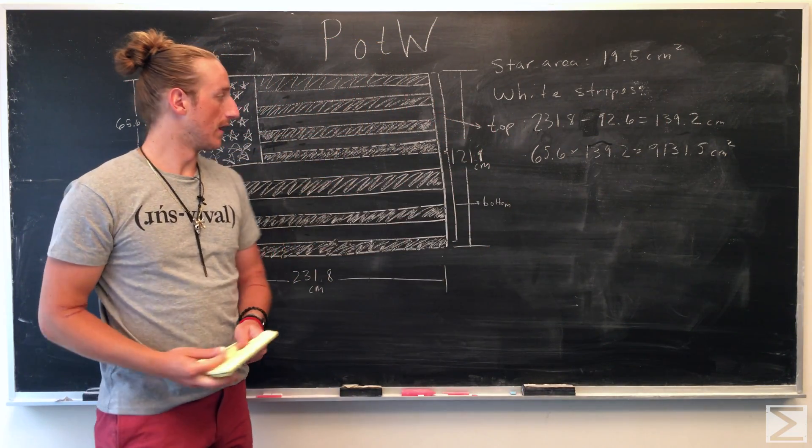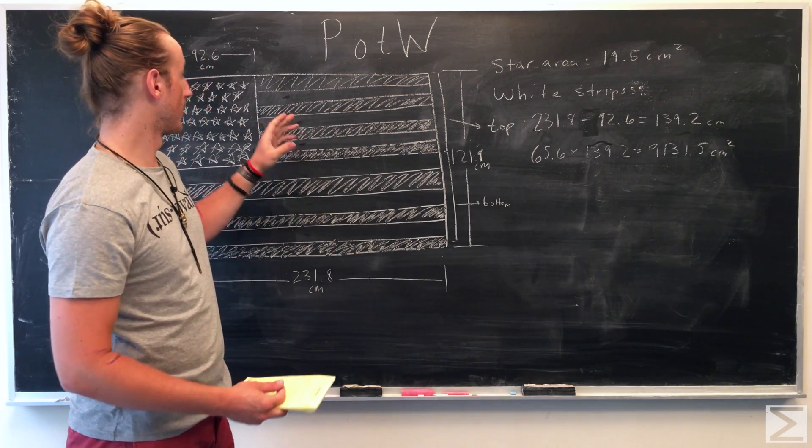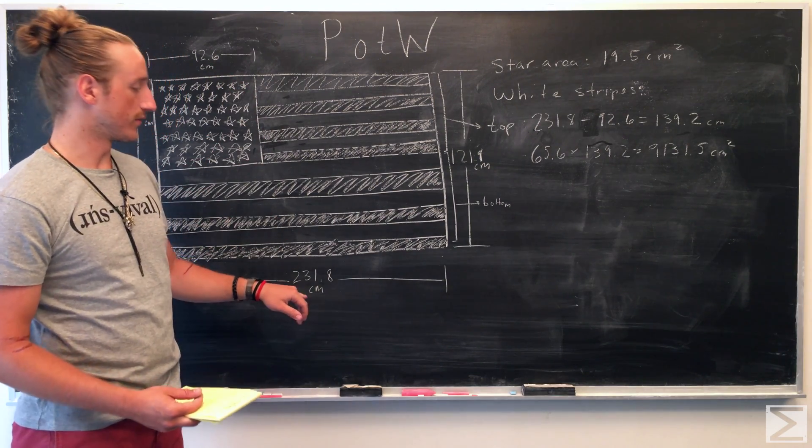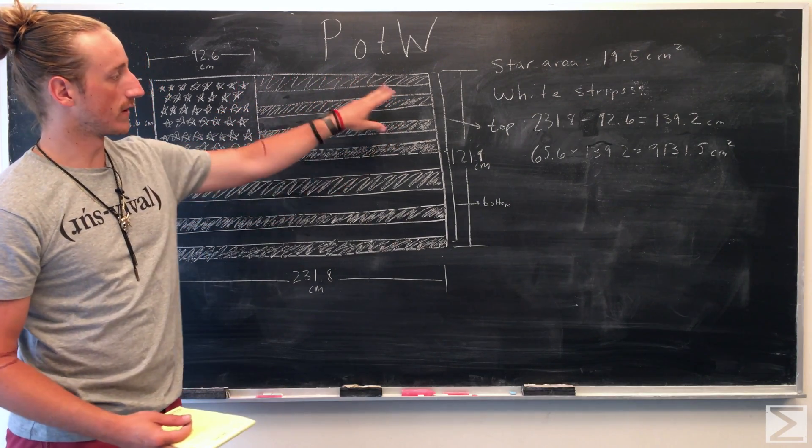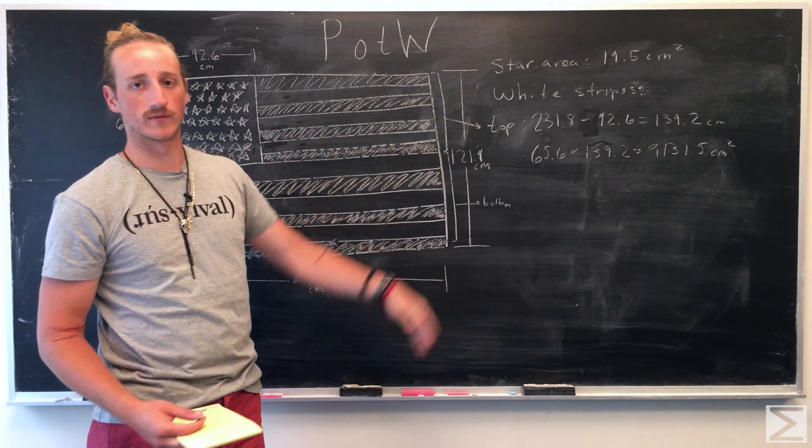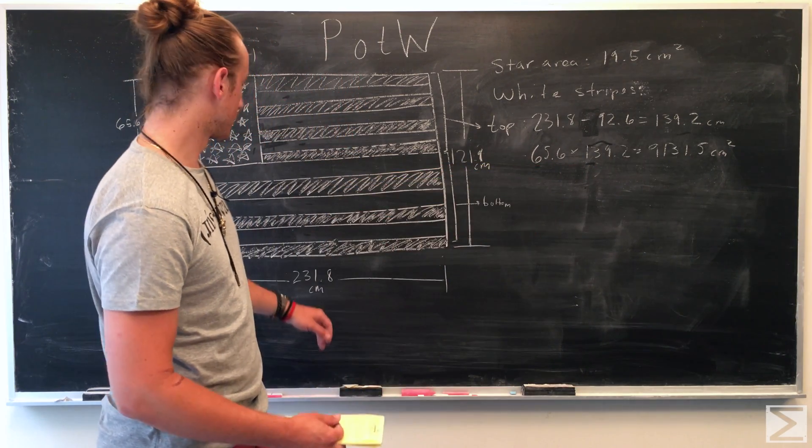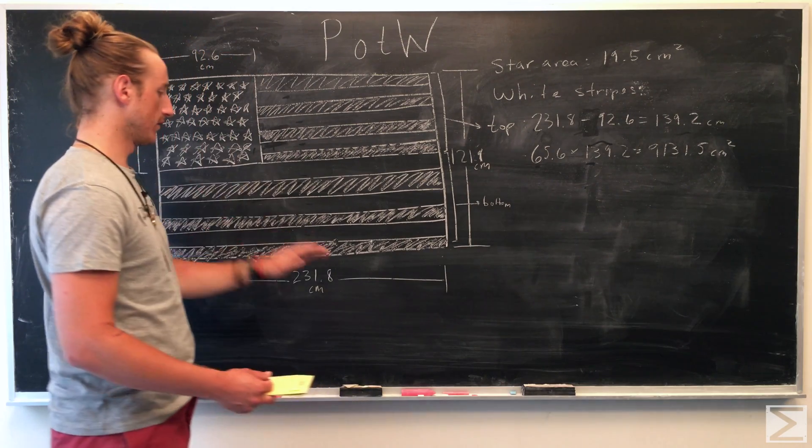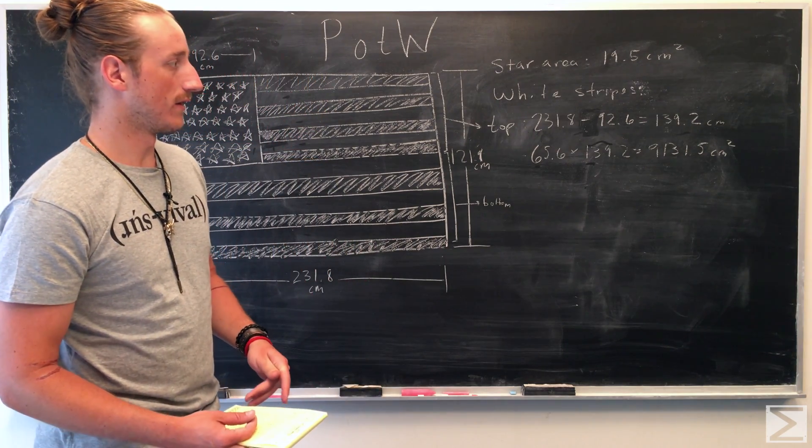Looking at the top first, we're going to find the whole area of this group. We're going to first subtract 92.6 from 231.8, just to find this length. We know the height of this rectangle is 65.6 because the stripes of the flag cut over from there. 65.6 times 139.2, which is what we found was the difference between this part and the whole flag, gives us 9131.5 centimeters squared.